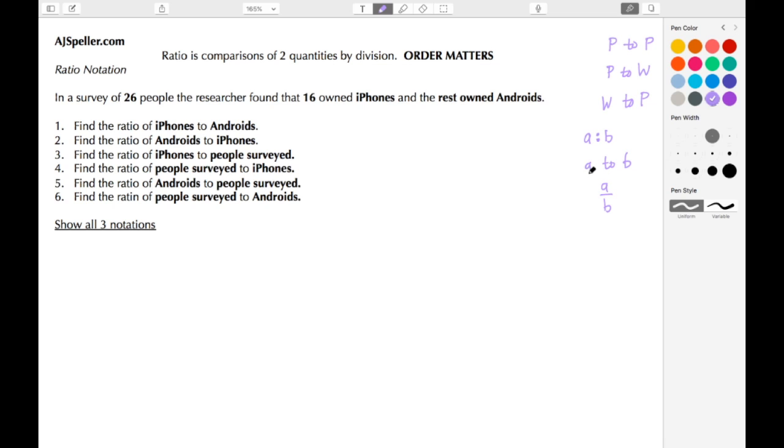And again, the order in which we place these numbers is very important. So let's take a look at our question here. In a survey of 26 people, the researchers found that 16 people owned iPhones and the rest owned Androids.